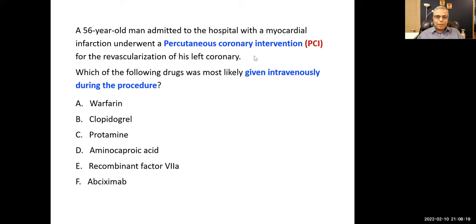The answer is F, which is abciximab — excellent, that is the right answer. You must read the question carefully. Someone wrote clopidogrel, but the question specifies intravenous administration. Warfarin is given orally; clopidogrel is given orally. The correct answer is abciximab. Protamine sulfate is a heparin antidote, aminocaproic acid and recombinant factor VIIa are used for bleeding episodes.